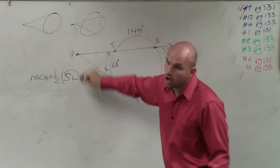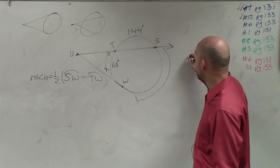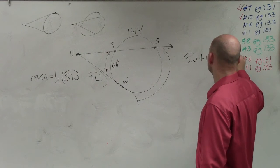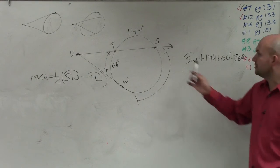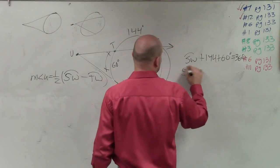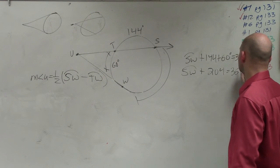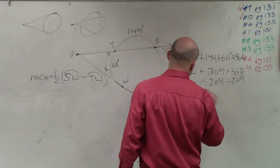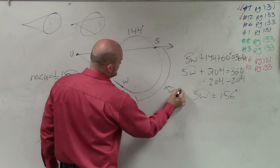Fortunately for us, we know that all the way around the circle is 360 degrees. So I can say: arc SW plus 144 plus 60 degrees equals 360. All of these arcs add up to 360. I can combine these: arc SW plus 204 equals 360. Subtract 204 — SW equals 156 degrees.